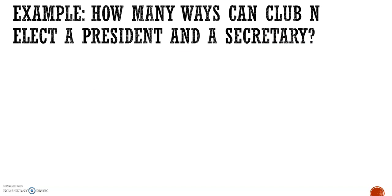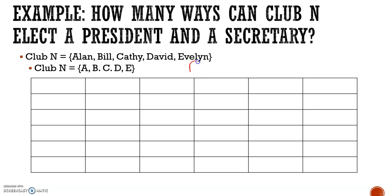Example: how many ways can Club N elect a president and a secretary? Remember, our Club N is Alan, Bill, Kathy, David, and Evelyn. We're going to use the abbreviations A, B, C, D, and E for their names. And we'll talk about the president and the secretary. Order is going to matter. If you're in the first position, you're president, or the second position, you are secretary.